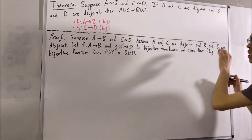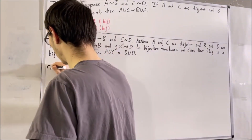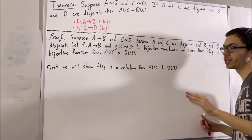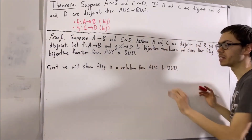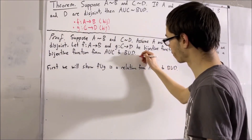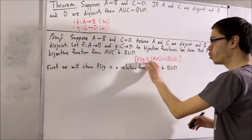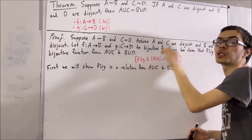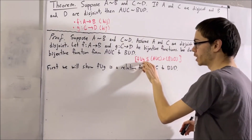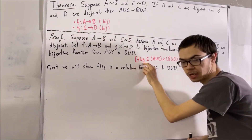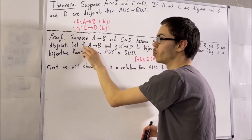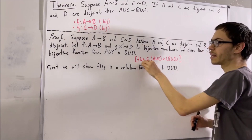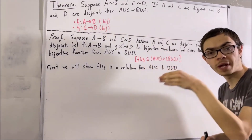Let's start by showing that F∪G is a relation from A∪C to B∪D. What does this mean? We're trying to show that F∪G is a subset of (A∪C)×(B∪D). To prove this, let's give ourselves an arbitrary element of F∪G. Every element of F∪G is an ordered pair, because everything in F∪G is either in F or in G, and everything in F and G is an ordered pair. So let's say our arbitrary element of F∪G is the ordered pair (P, Q).